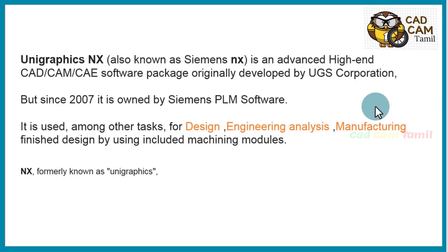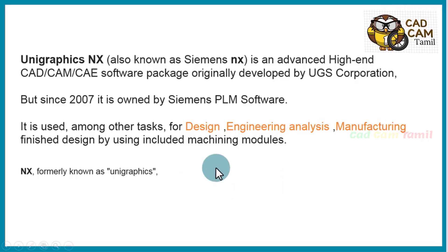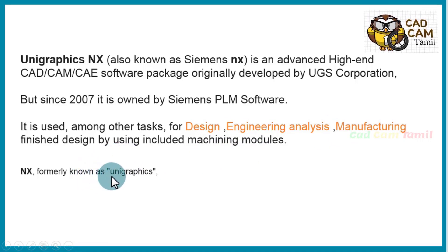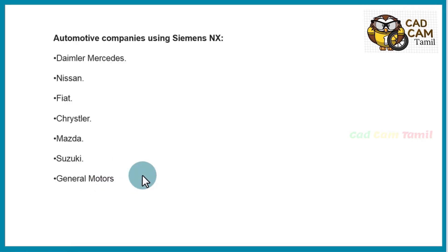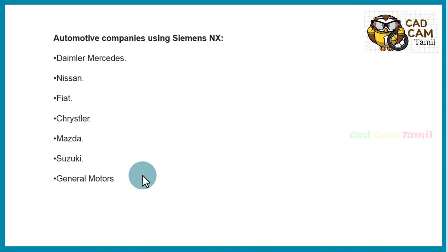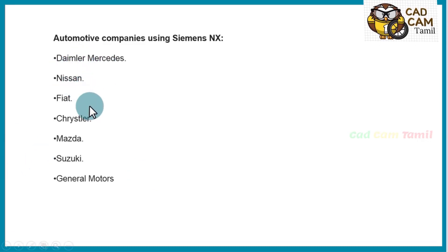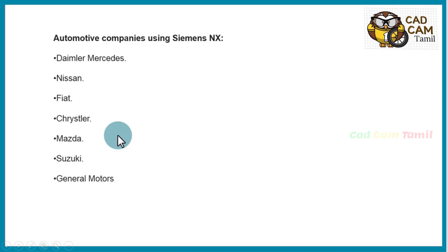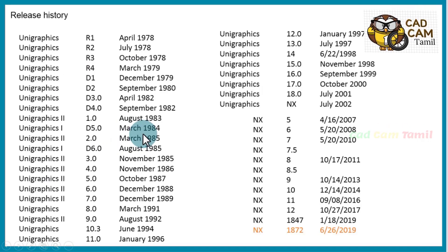In 2007, the Siemens PLM software acquired UGS Corporation. This software covers design, engineering, manufacturing, and more. It is called UGS, used and developed by UGS Corporation. The initial Unigraphics software version 5x R1 was released in April 1978.